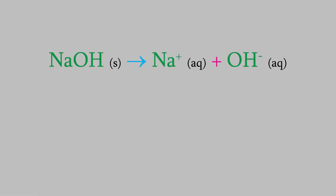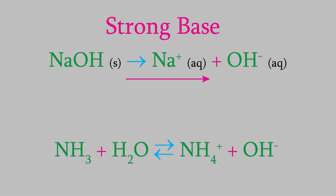The same ideas are true for bases. In this case, all the sodium hydroxide molecules break up to form sodium and hydroxide, so that makes it a strong base. On the other hand, when ammonia reacts with water, it's a reversible reaction, so some of the ammonium and hydroxide ions will recombine to form the reactants again. That makes ammonia a weak base.